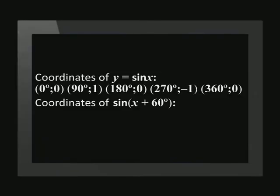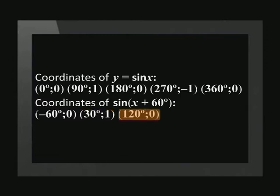Since the graph shifts to the left, we subtract 60 from every x-coordinate. This gives us the coordinates: (-60, 0), (30, 1), (120, 0).